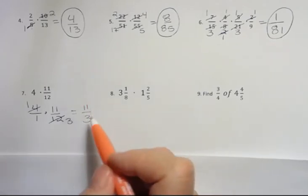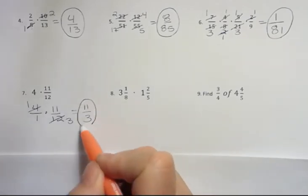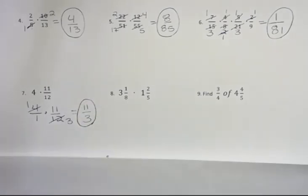Now, I'm going to leave that as an improper fraction unless I'm asked to change it to a mixed number. A mixed number is not the end-all, be-all. Sometimes you just want to leave it as an improper.